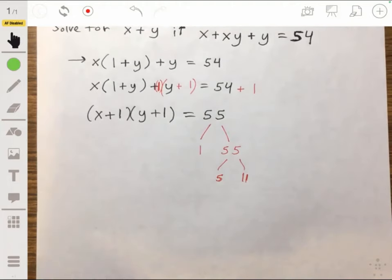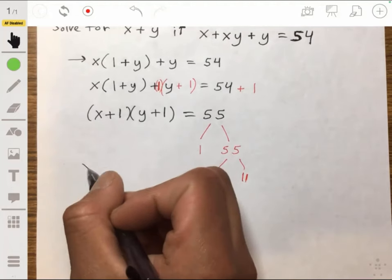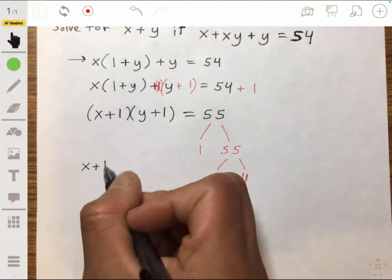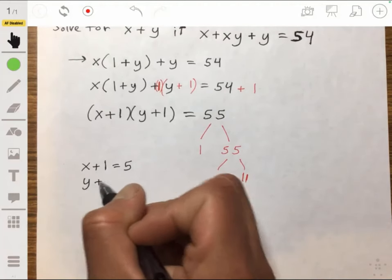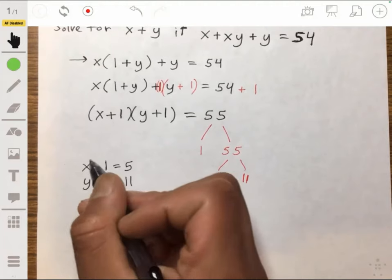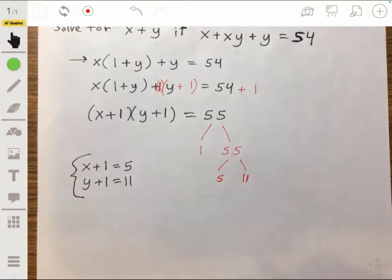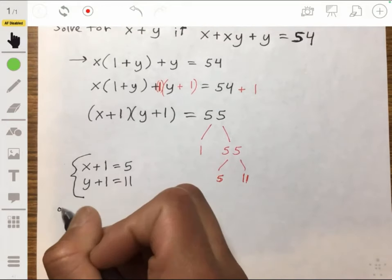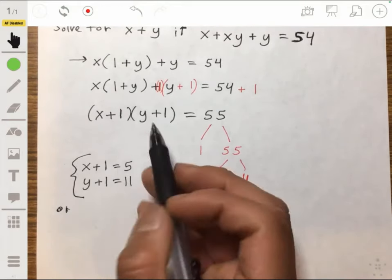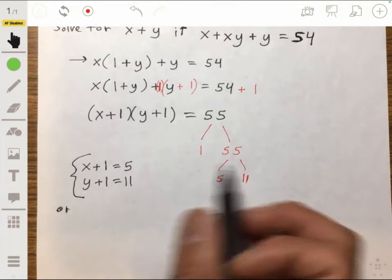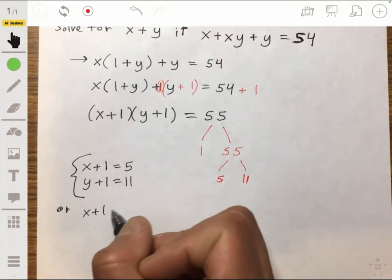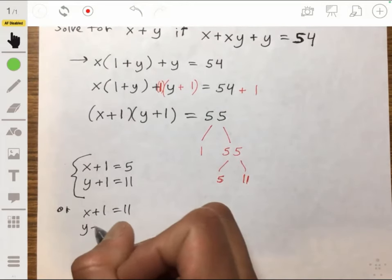And so you either have that x plus 1 equals 5 and that y plus 1 equals 11. That's one possible solution set. Or you could have that the other way around, basically. You could have that x plus 1 is 11, and that y plus 1 is 5.